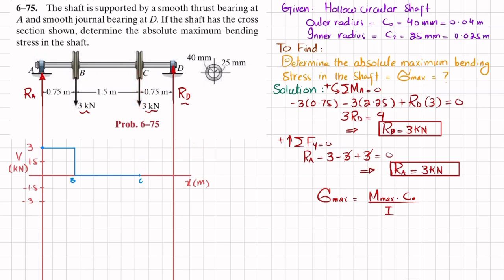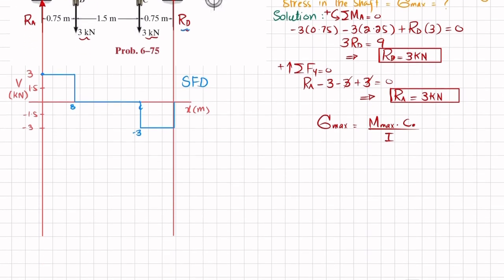Moving from C to D there is no other shear force, so it remains horizontal. At the end we have Rd which is plus 3, so minus 3 plus 3 brings it back to zero. This completes the shear force diagram.